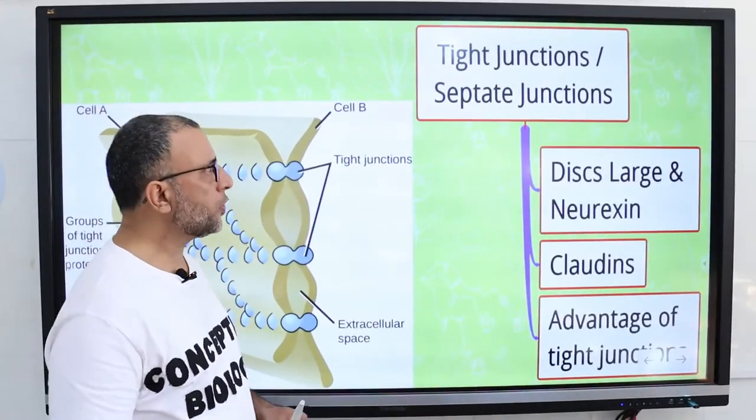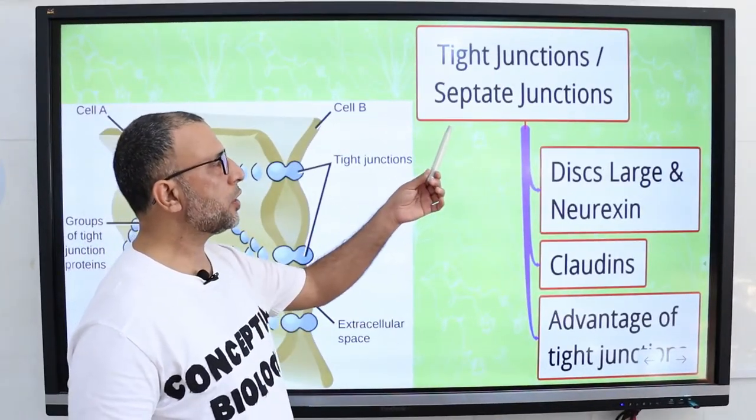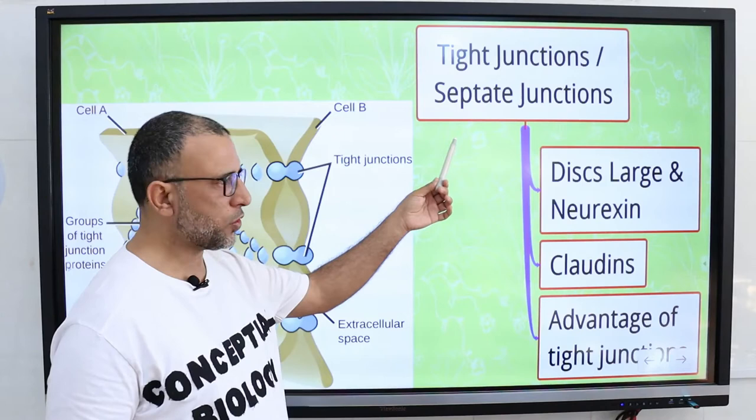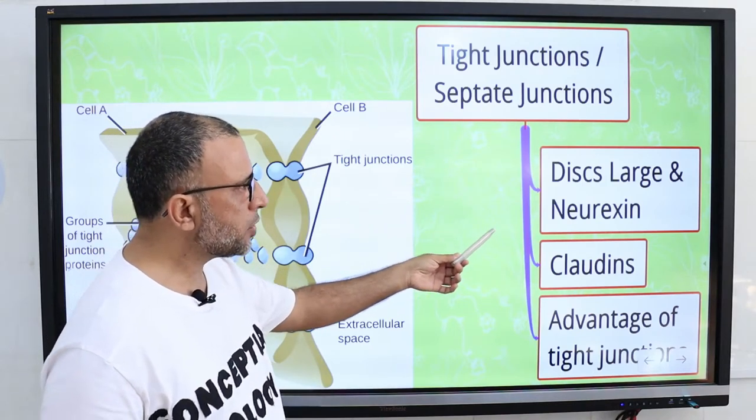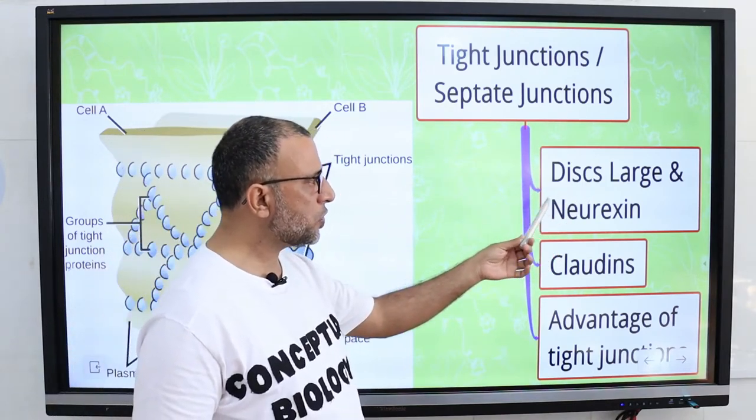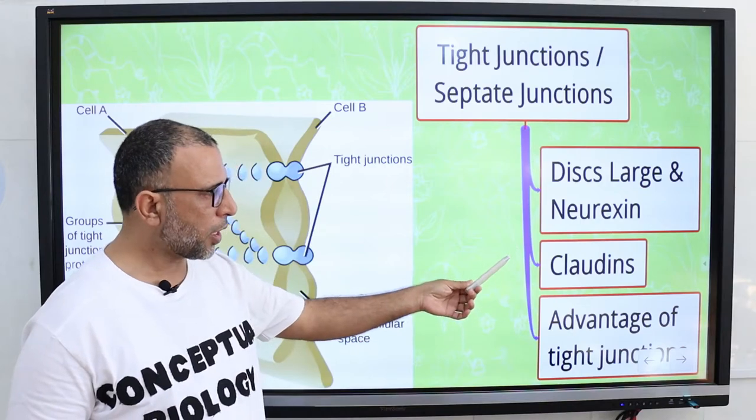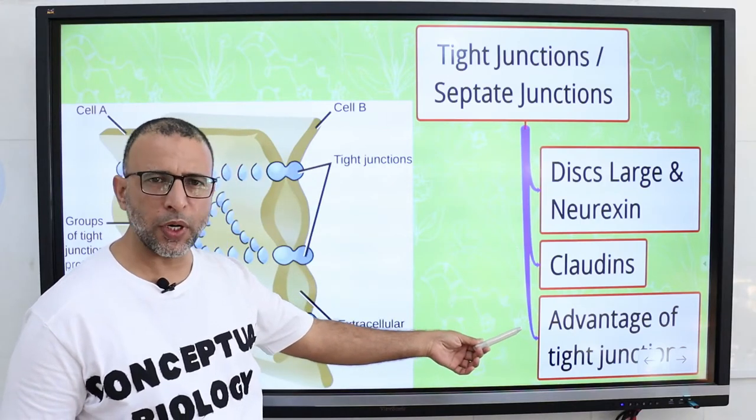In this lecture, I am going to discuss tight junctions or septate junctions. Main points of the lesson are discs large and neurexin, claudins, and the advantage of tight junctions.